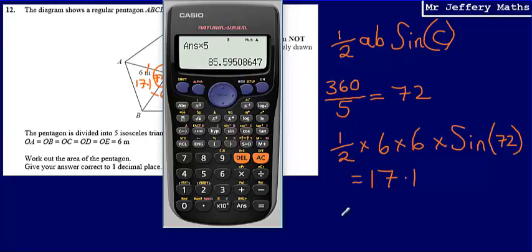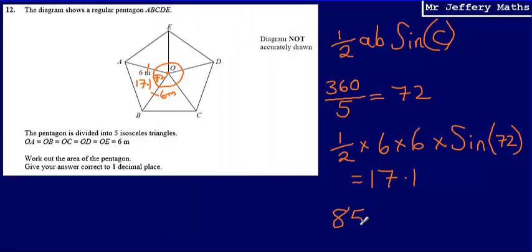So my final answer: the area of the pentagon is 85.6 square meters, correct to one decimal place.